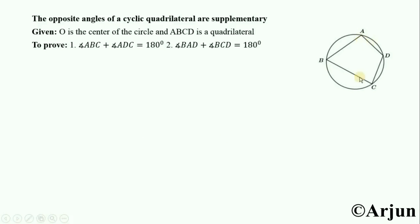Angle A and angle C are opposite angles of the quadrilateral and the sum of these two angles equals 180 degrees, that is supplementary. Angle B and angle D are also opposite angles of the quadrilateral, and we have to show that angle B plus angle D equals 180 degrees, supplementary. These are our two proofs.